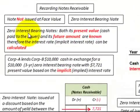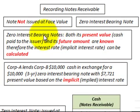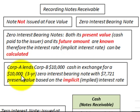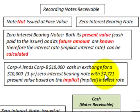Now let's look at a zero interest-bearing note — a note with zero interest that doesn't require any interest payments. Both its present value (the cash paid to the issuer) and its future amount are known, so the implicit interest rate can be calculated. For example, Corporation A lends Corporation B $10,000 in cash in exchange for a $10,000 three-year zero interest-bearing note, with its present value equal to $7,721 based on the implicit interest rate.